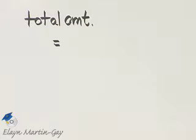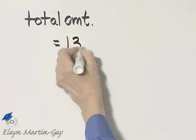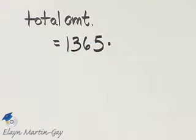But for compound interest, the total amount will equal the original principal. Now, notice we were given the original principal. That's $1,365. I'll write that down. And then you multiply that by the compound interest factor from an appendix.